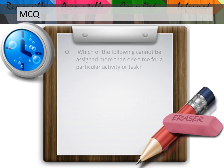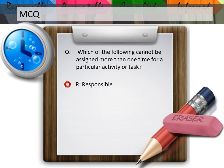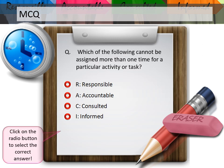Let me ask you a question. Which of the following cannot be assigned more than one time for a particular activity or task? Is it R - Responsible, A - Accountable, C - Consulted, or I - Informed? Click on the radio button to select the correct answer.